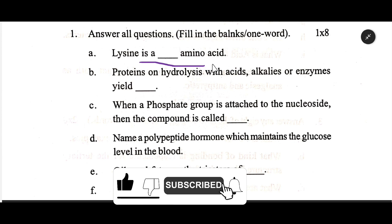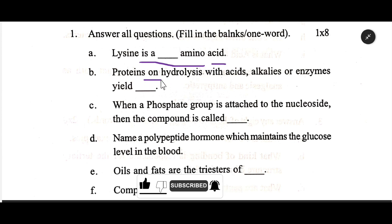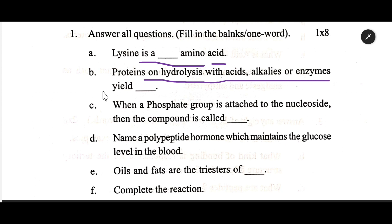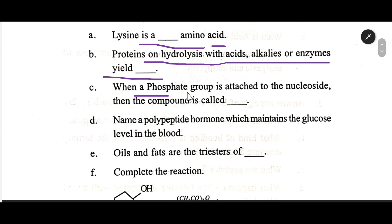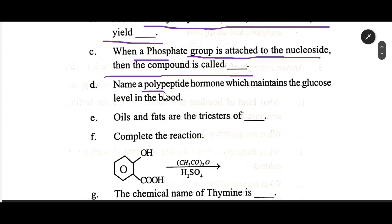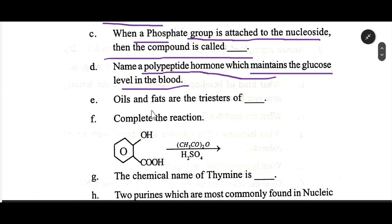Lysine is a dash amino acid. Proteins on hydrolysis with acids, alkalies, or enzymes yield dash. When a phosphate group is attached to the nucleoside, the compound is called as dash. Name the polypeptide hormone which maintains the glucose level in the blood. Oils and fats are the esters of dash.